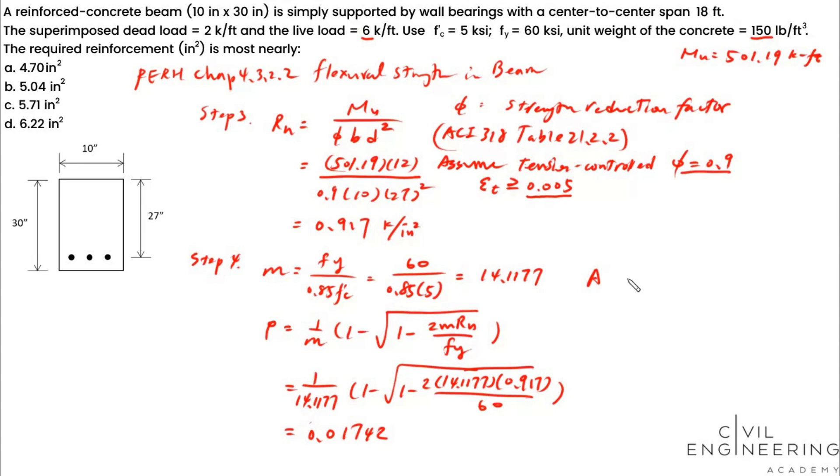Then finally, your As equals rho times b-d, which is 0.01742 times 10 times 27. So you're having your reinforcement area, 4.7 inch square.